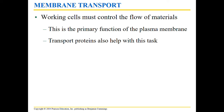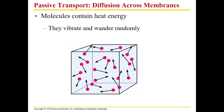Moving on to membrane transport. The plasma membrane is selectively permeable — only certain things can cross it. For things that can cross, there will be transport proteins to help them pass through. Large molecules like sugar can't pass through the selectively permeable barrier so they need a transport protein. The first type we'll discuss is passive transport — passive means we don't need ATP or energy. The first example is diffusion, where molecules move from high to low concentration.